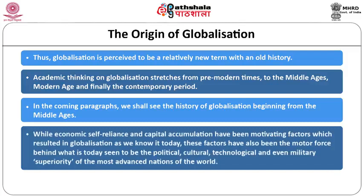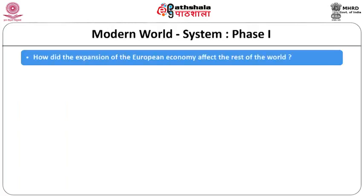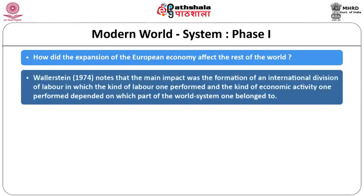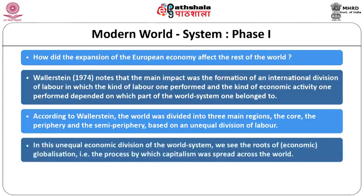Economic self-reliance and capital accumulation have been motivating factors behind globalization, and also the motor force behind the political, cultural, and military superiority of the most advanced nations. Wallerstein notes that the main impact of European economic expansion was the formation of an international division of labor. According to Wallerstein, the world was divided into three main regions — the core, the periphery, and the semi-periphery — based on the unequal division of labor, through which capitalism was spread across the world.